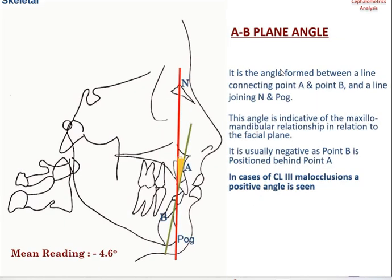The next skeletal component is the AB plane angle. You construct a line from nasion to Pogonion and a line joining point A and point B, then measure the AB plane angle. This angle is indicative of the maxillomandibular relationship in relation to the facial plane. Since point B is usually placed behind point A, this measure will typically be negative, unless the patient has Class III malocclusion, when the angle will be positive.